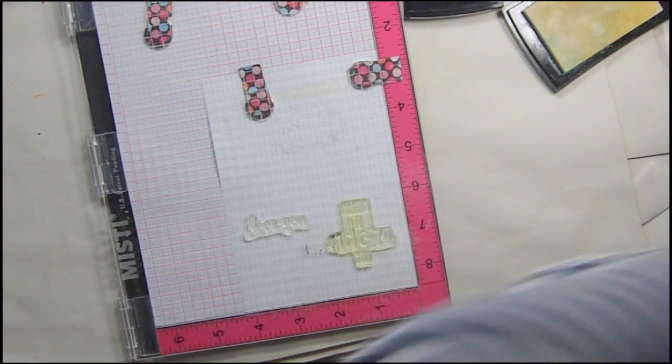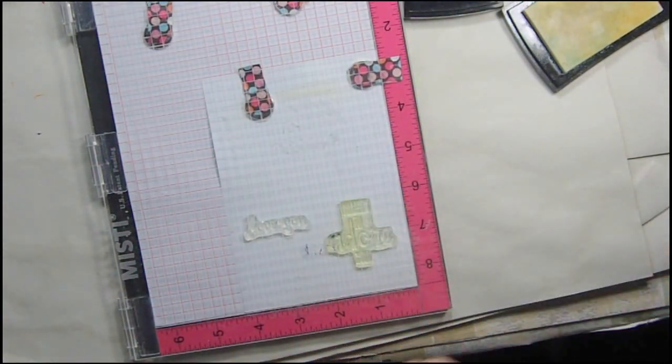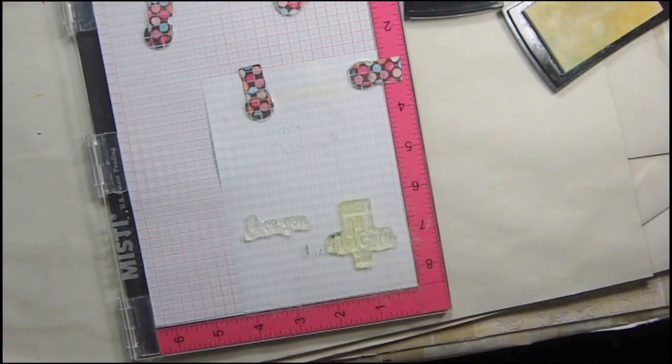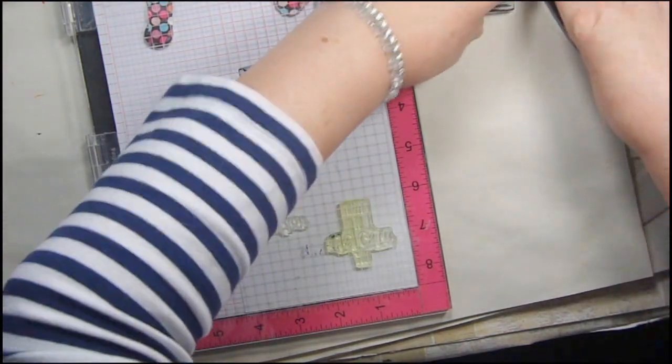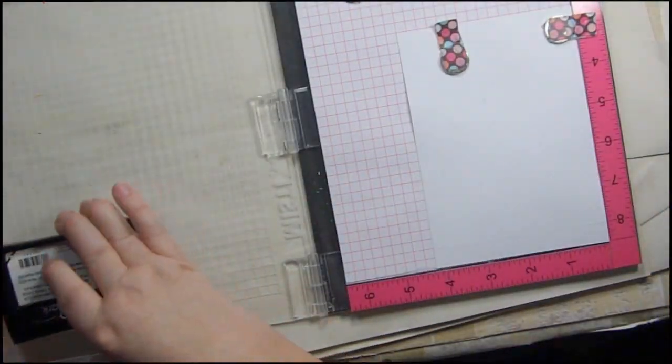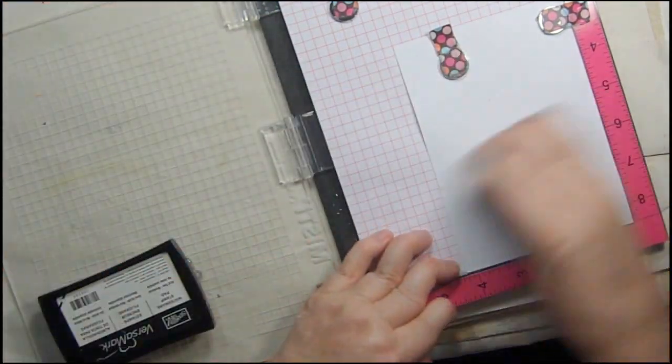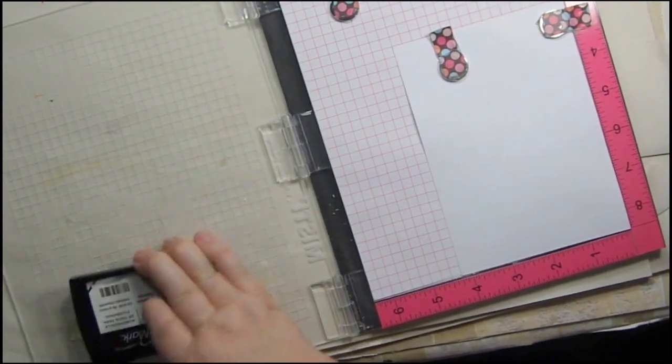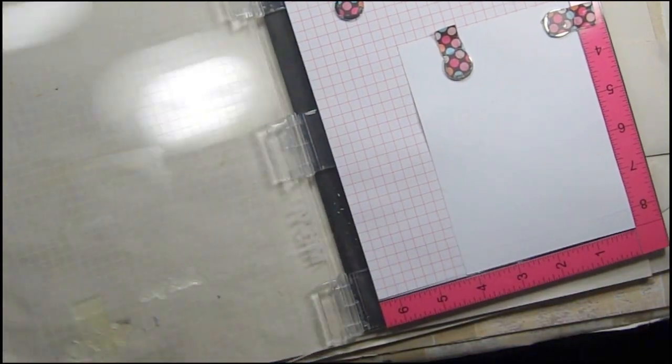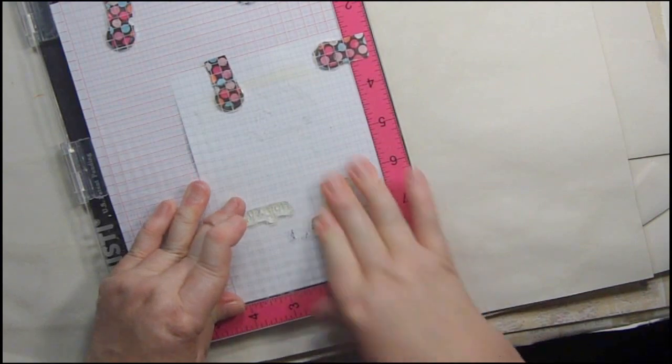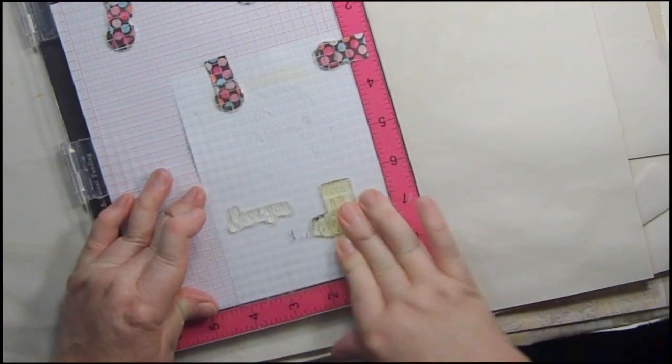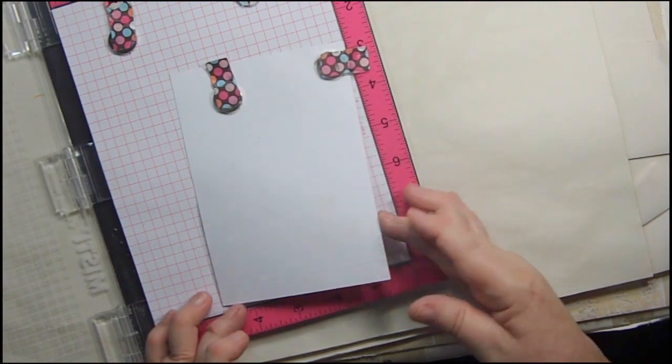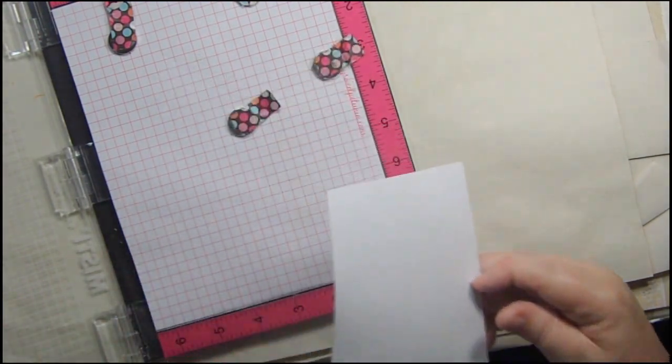The first thing we're going to do is use a stamp set from Concord and 9th called Love You Mean It for our sentiment. One says I happen to adore you and the other one just says love you. I'm going to just put a little Versamark on them, and I need to run my little corn starch pouch over the paper to make sure that nothing sticks that I don't want. Then we'll just make sure we got our ink, really rub it in there so that we're sure that we got a good transfer.